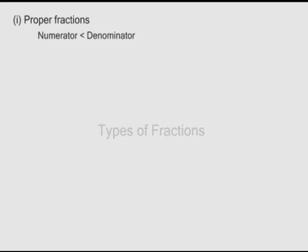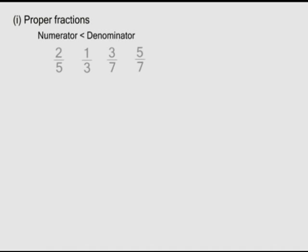If the numerator of a fraction is smaller than the denominator, the fraction is called a proper one. For example: two over five, one over three, three over seven, five over seven, and so on. Proper fractions are smaller than one.